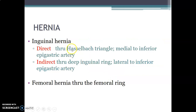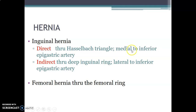We have two types of inguinal hernia — protrusion of viscera from the abdominal wall through the inguinal canal. We have direct and indirect hernias. The direct inguinal hernia involves viscera passing through Hesselbach's triangle.